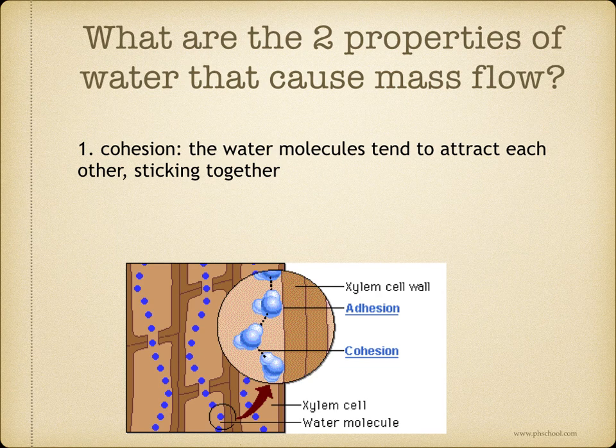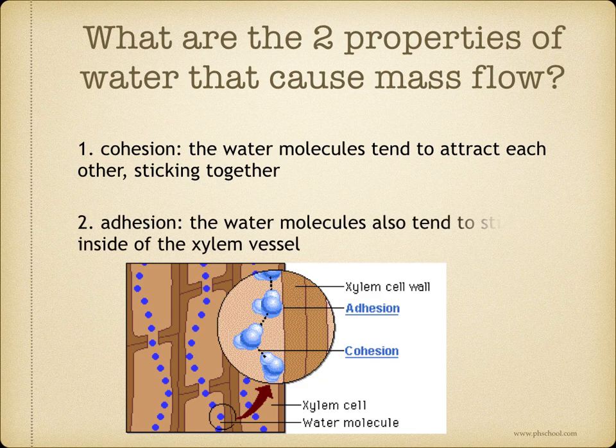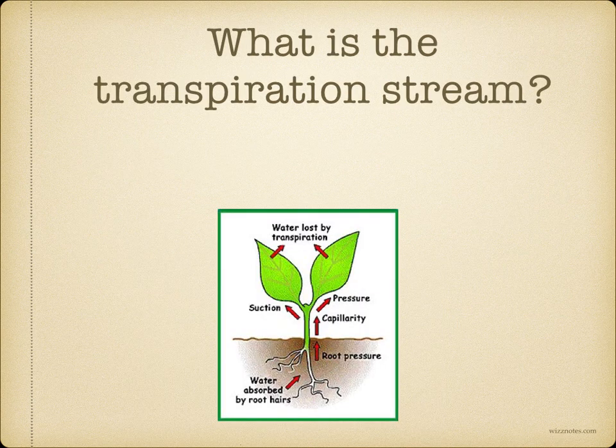There are two important properties of water that cause mass flow. The first is cohesion — water molecules tend to attract each other, sticking together, as you can see in this diagram. And then you've got adhesion, which is where water molecules also tend to stick to the inside of the xylem vessel.